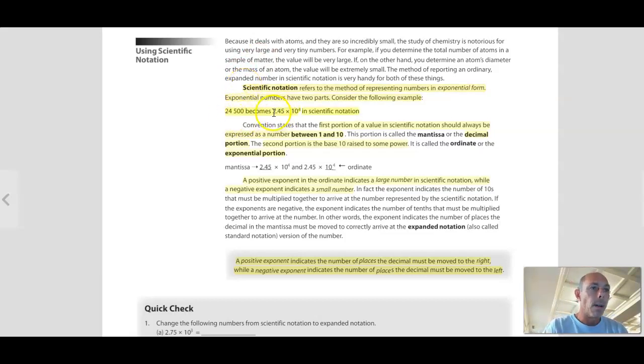I want to acknowledge that in a number in scientific notation there's always two parts to that number. There's the decimal portion, and then there's the exponential portion. The decimal portion is always going to be between 1 and 10, and technically it should be less than 10, so greater than or equal to 1 and less than 10. And then the exponential portion is always 10 raised to some power, and that power can be positive or negative, which we'll talk about in a moment. The decimal portion can have as many decimals to it as there are significant figures in that number, and that's the second part of this lecture, is about significant figures.